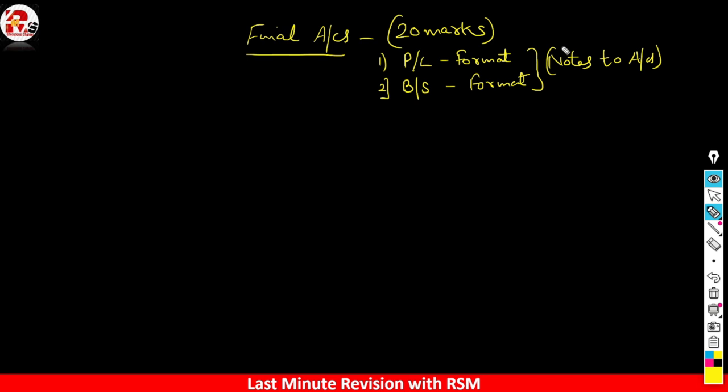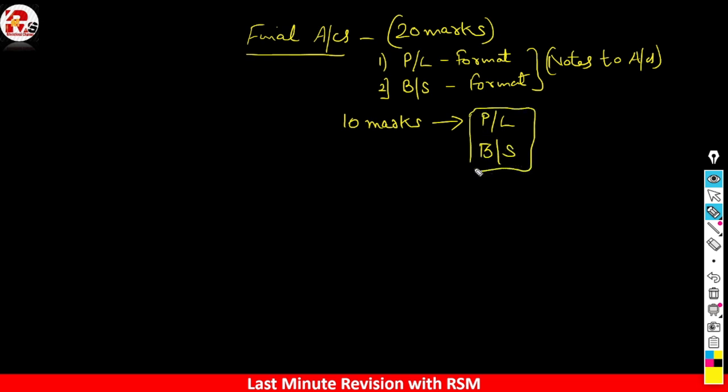What is the problem? Time is more of the problem — the student's time is wasted. But if we attempt this chapter, especially if there are compulsory questions, there will be a benefit. In this chapter, you will find simple posting marks — there will be no journal entries. The second type of question the examiner asks is for 10 marks: you will be asked only Profit and Loss or only Balance Sheet.